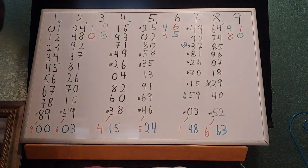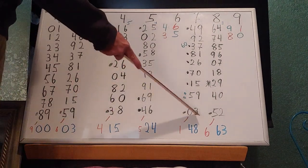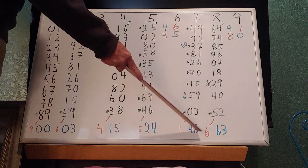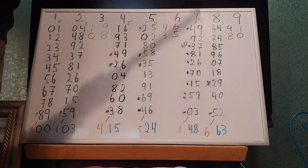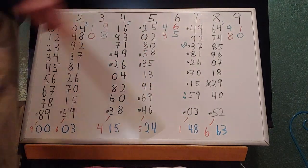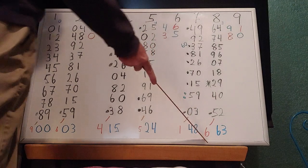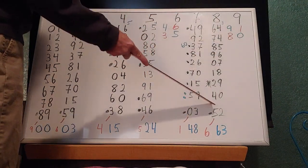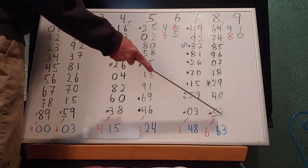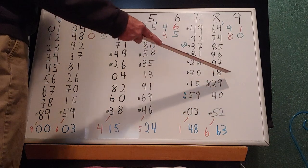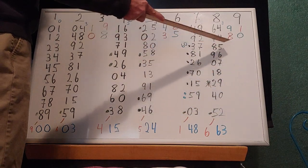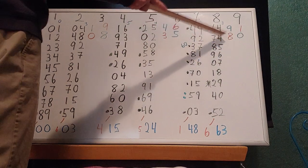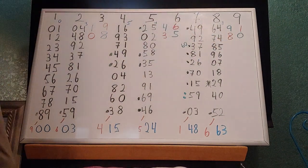And the way it repeats is that when you get to this point, you start from here again — you go back down here. For 8, it's 7, 9, 0, 1, 2, 3, 4, 5, 6 — then 7, 9, 0, 1, 2, 3, 4, 5, 5, 2 — then 0, 9, 8, 7, 6, 5, 4 — then 3, 2, 0, 9, 8, 7, 6, 5, 4, 4.